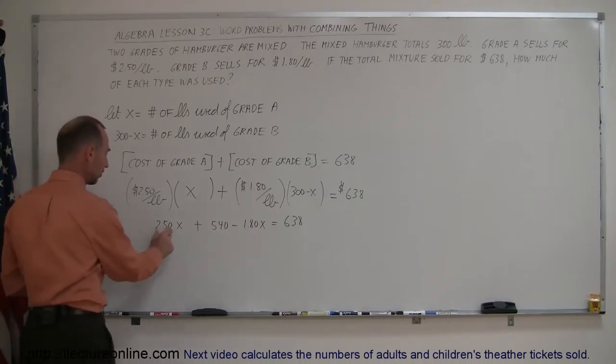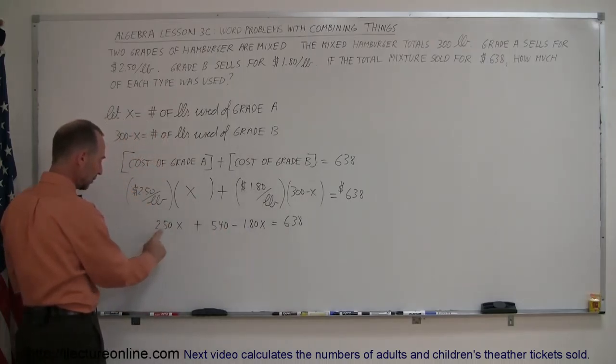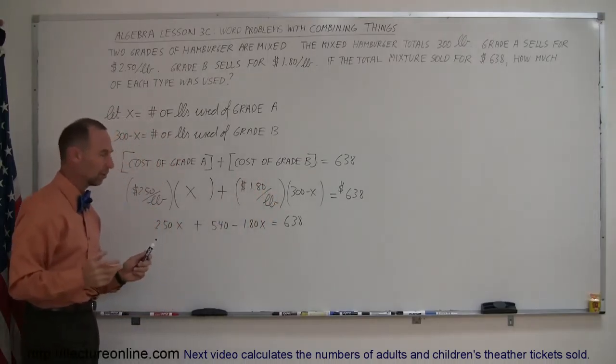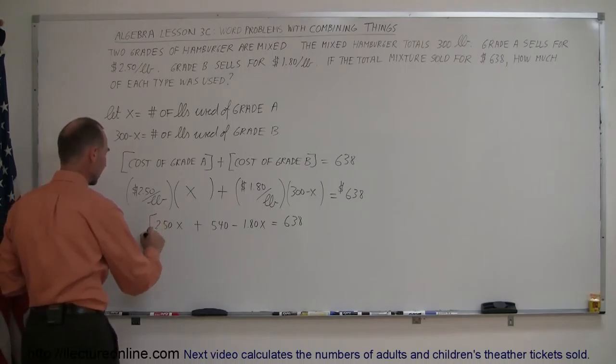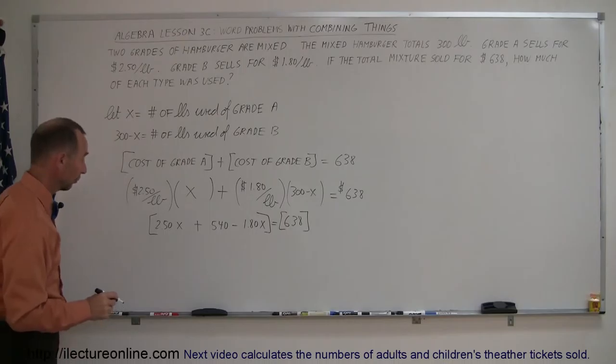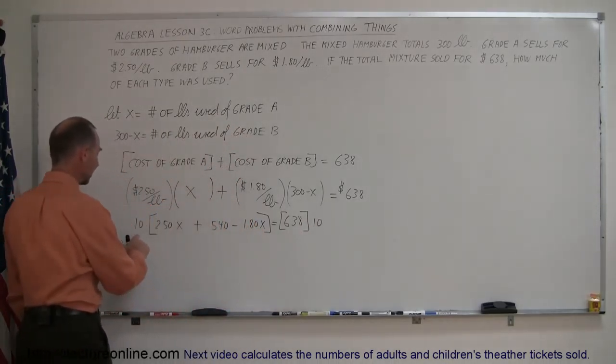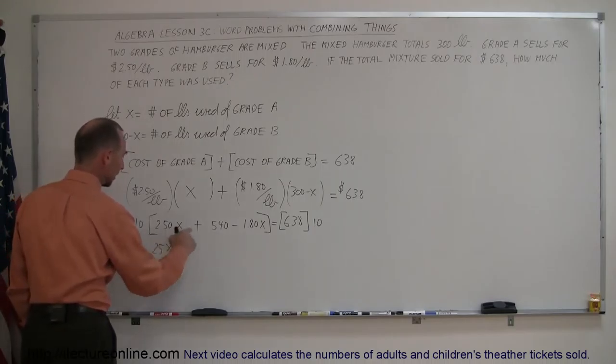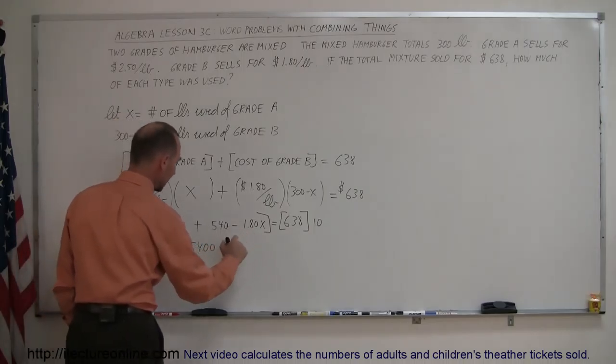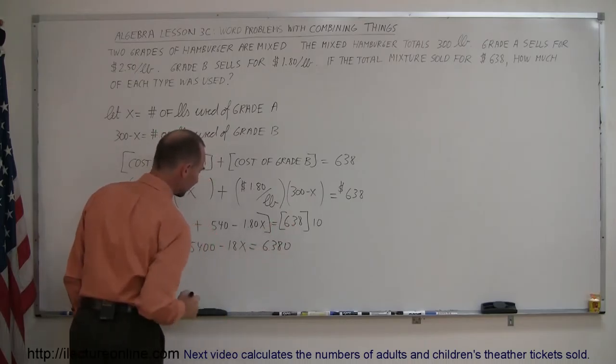Now, notice that we have a decimal here. We have a decimal here. To get rid of the decimal place, we have to multiply everything by 10. If I multiply this by 10, I get 25. If I multiply this by 10, I get 18. So, I can go ahead and multiply both sides of the equation by 10. And I do that to get rid of the decimal first. Multiply this times 10. Multiply this times 10. What do we get? 10 times this gives me 25X. 10 times this gives me plus 5,400. And 10 times this gives me 18. That's minus 18X. And that equals 10 times this, which is 6,380.